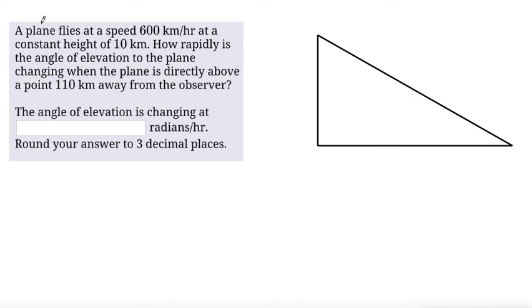This problem says a plane flies at a speed of 600 kilometers per hour at a constant height of 10 kilometers. How rapidly is the angle of elevation to the plane changing when the plane is directly above a point 110 kilometers away from the observer?